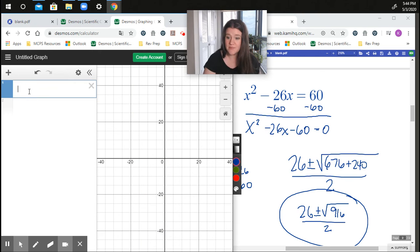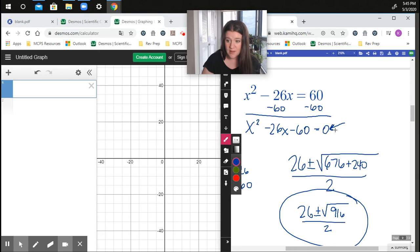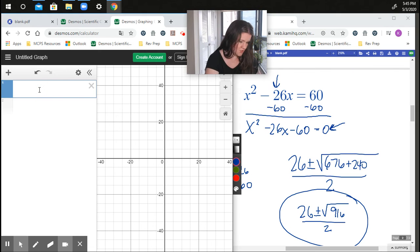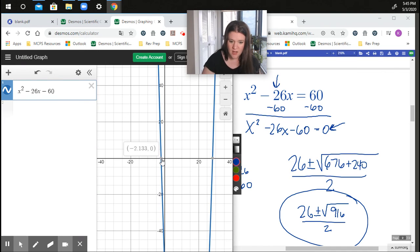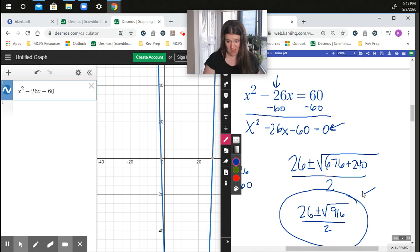I plug this in. I am going to have to put in the one that equals to zero, because if I put this in right here, I won't know what it's doing because it'll have an equal sign in there. Put it in in standard form, so that's going to be x squared minus 26x minus 60, and as you can see here, 26 plus root 916 divided by 2 is going to be 28.33, 26 minus root 916 divided by 2 is going to be negative 2.133.